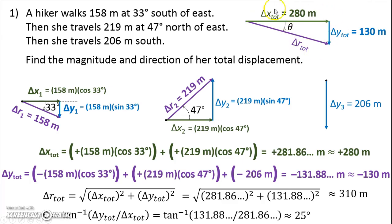Looking at this final right triangle, we see it is south of east. So that's how you solve these problems. The final answer — the magnitude and direction of total displacement — is about 310 meters at 25 degrees south of east. And this is just about the most difficult math we do all year. So give yourself a pat on the back.